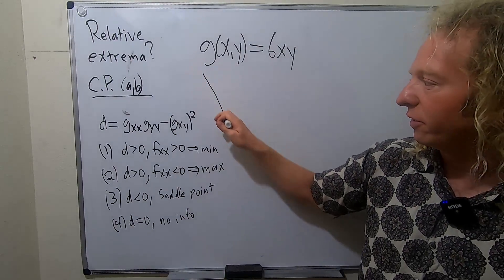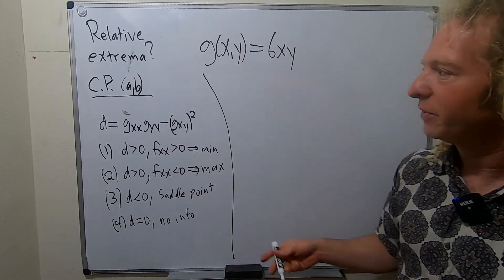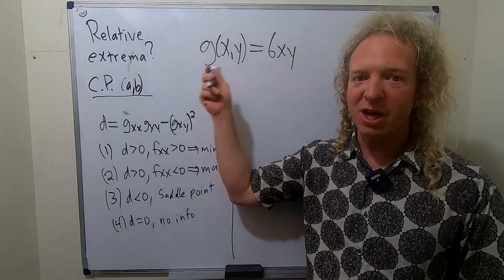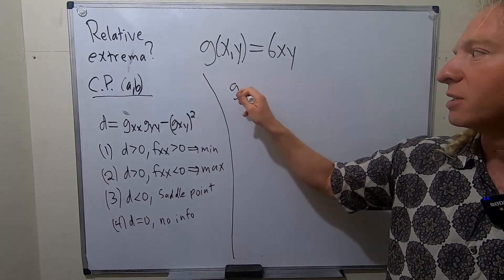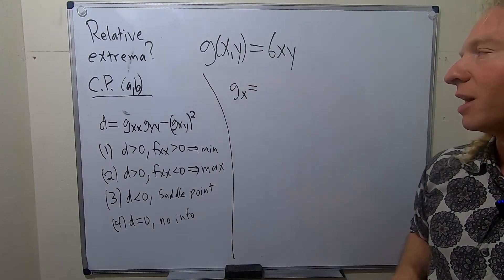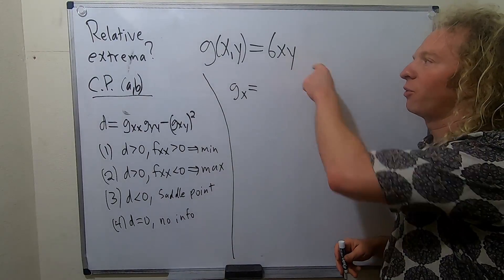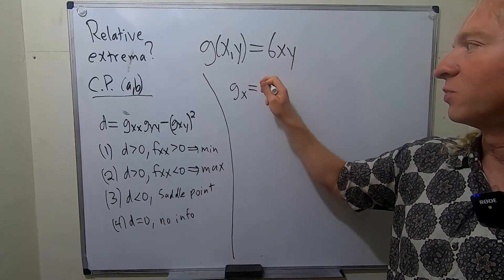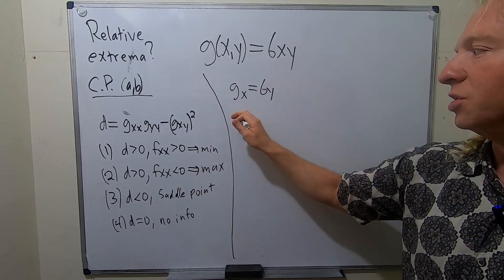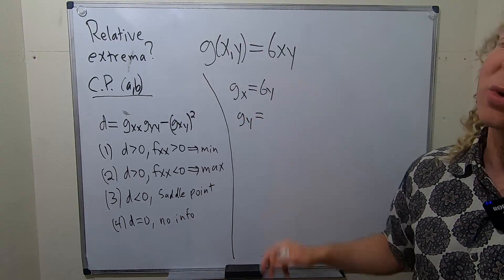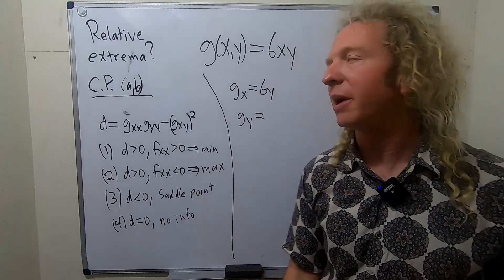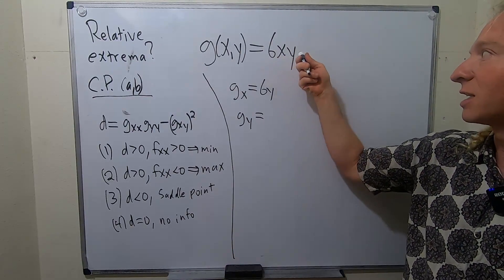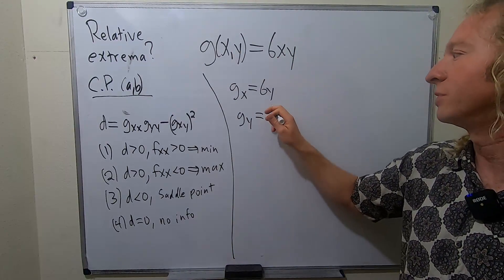So let's go through it very carefully and show all the work. We'll start by finding the critical points. To do that, you compute GX and GY. So GX is the partial derivative with respect to X. When we do that, the Y is a constant. So this will just be 6Y because the derivative of X is 1. GY, this is the partial derivative with respect to Y. The X is constant, so it'll just be 6X because the derivative of Y is 1.